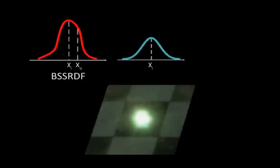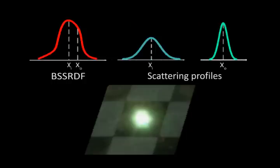The key to our representation is the decoupling of the subsurface scattering between two points as a product of two 1D radial scattering profiles, centered around the entrance and exit points.